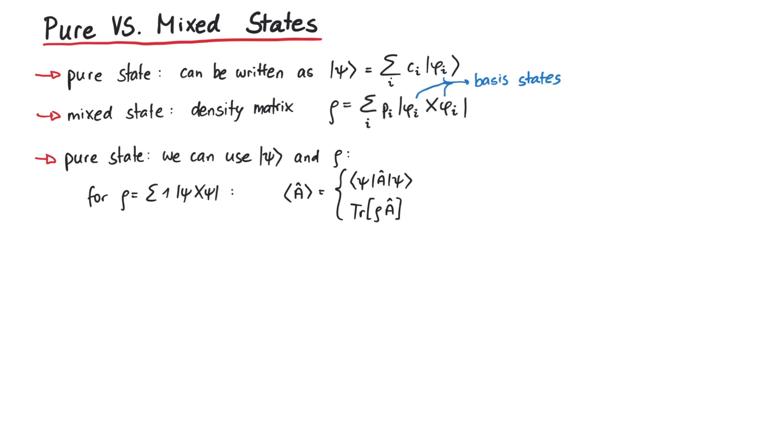However, to better understand the difference between a pure and a mixed state, let's consider the concrete example of a two-level system with basis states 0 and 1. If a quantum state is in the ket state psi with 1 over the square root of 2 times 0 plus 1 over the square root of 2 times 1, then this is a pure state.